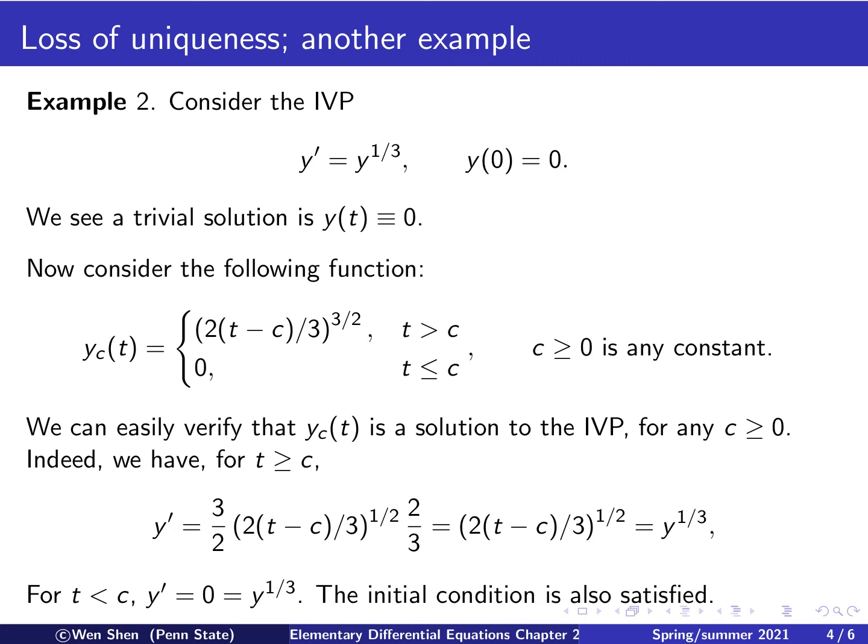And we can check that the solution is continuous at t equals c. For t less than c, taking the limit to t equal to c, y would be 0. And taking the limit on the right, as t approaches c for t bigger than c, we see this is 0. So the function yc of t would be 0 when t equals c. And finally, the initial condition is also satisfied, because it's just 0 here.